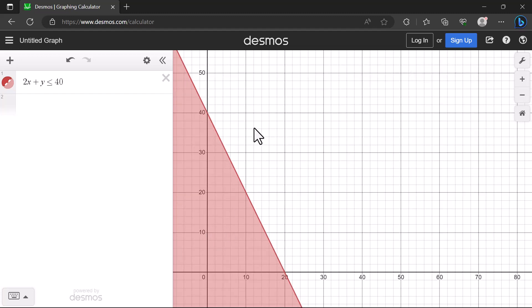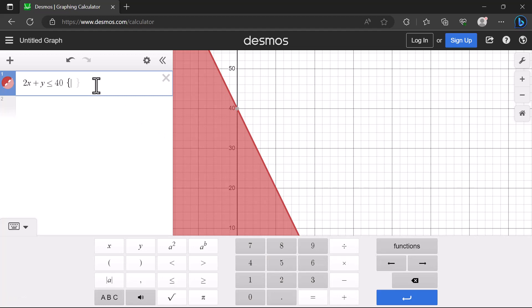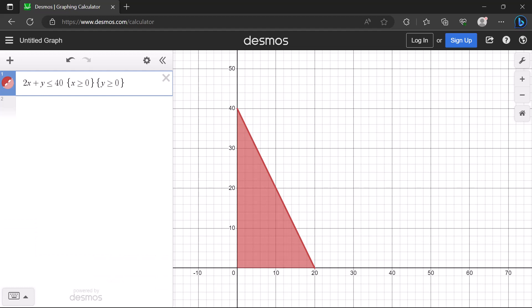Now I want to keep the graph in the first quadrant because of non-negativity and also get rid of this overflow here. I'm going to type curly bracket then x greater or equal to 0. Close the bracket. Then do the same for y. And this looks much better.